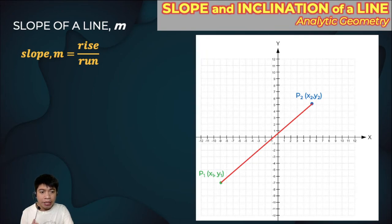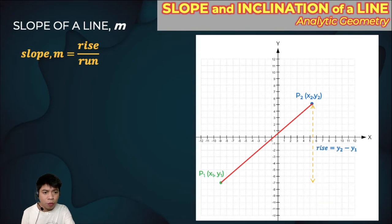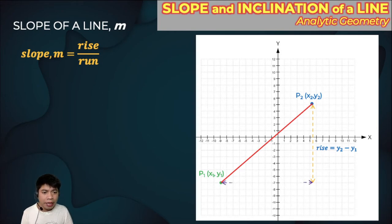The rise is the vertical distance of these two points. It is not necessarily the endpoints of the line — as long as the points are two points that the line passes through, you can compute the rise and the run. The rise here is y2 minus y1, which is simply the difference between the ordinates. And the run here is x2 minus x1.